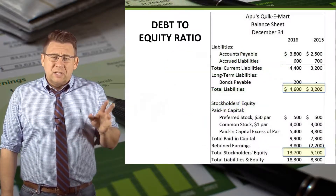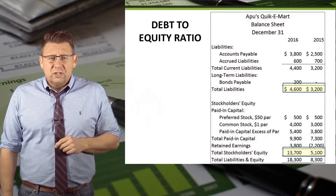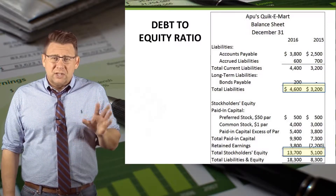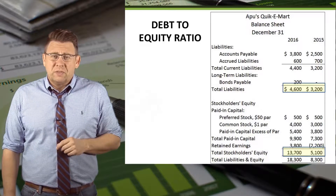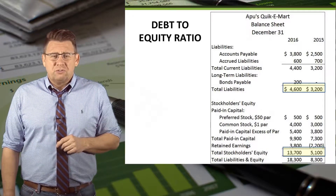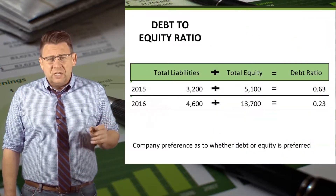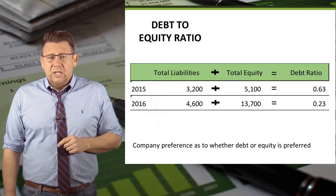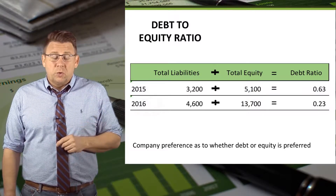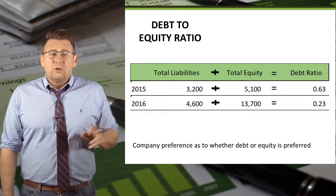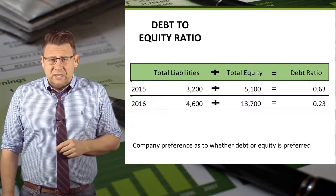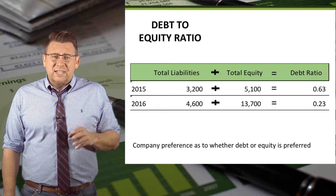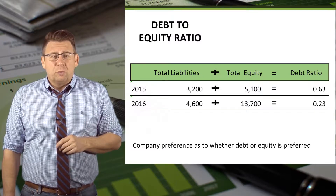Here is the liability and equity section of the balance sheet. We'll use the total liabilities and total stockholders' equity to determine the debt-to-equity ratio. For 2015, total liabilities divided by total equity gives us a debt-to-equity ratio of 0.63. For 2016, total liabilities divided by total equity gives us a debt-to-equity ratio of 0.23.